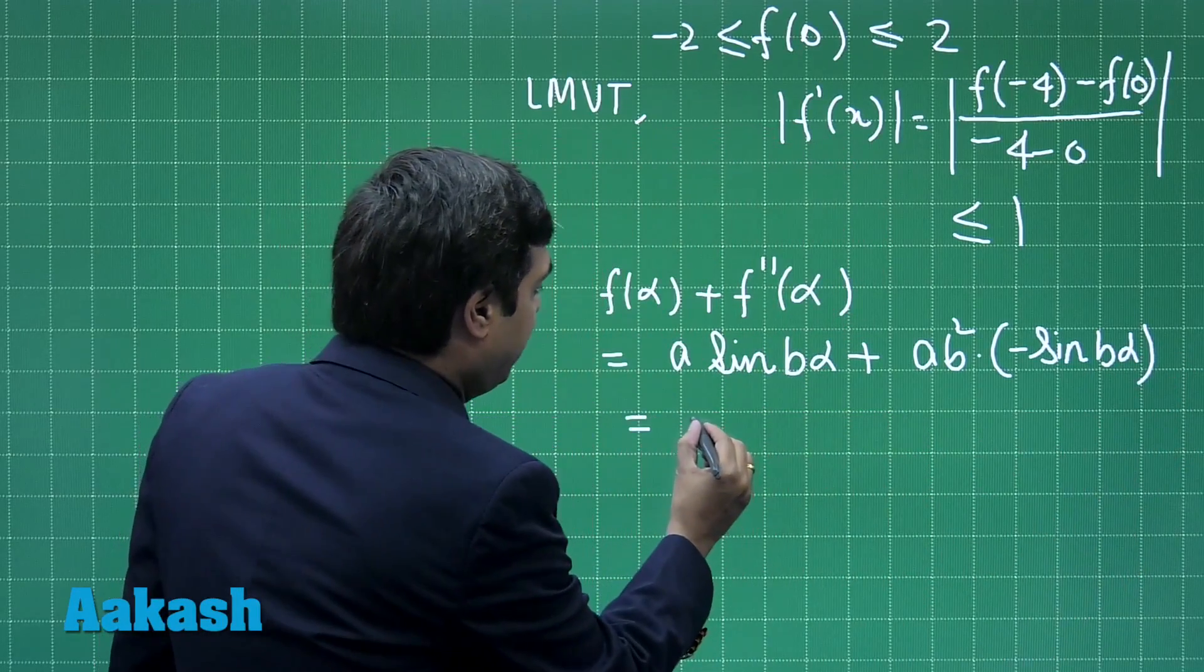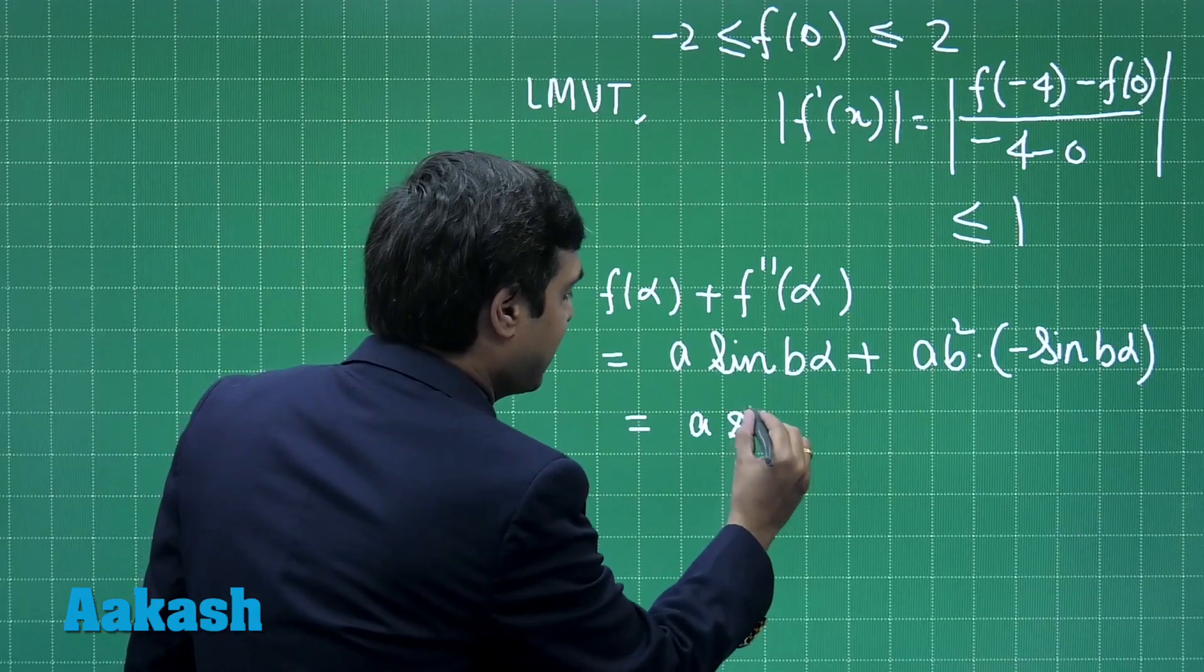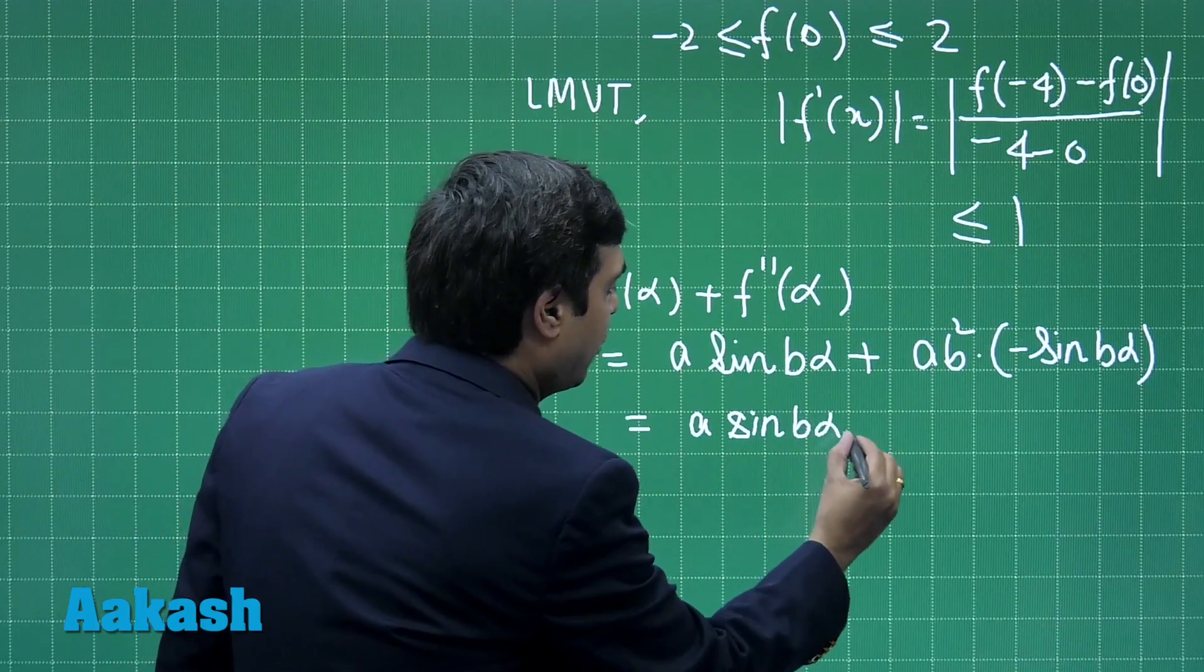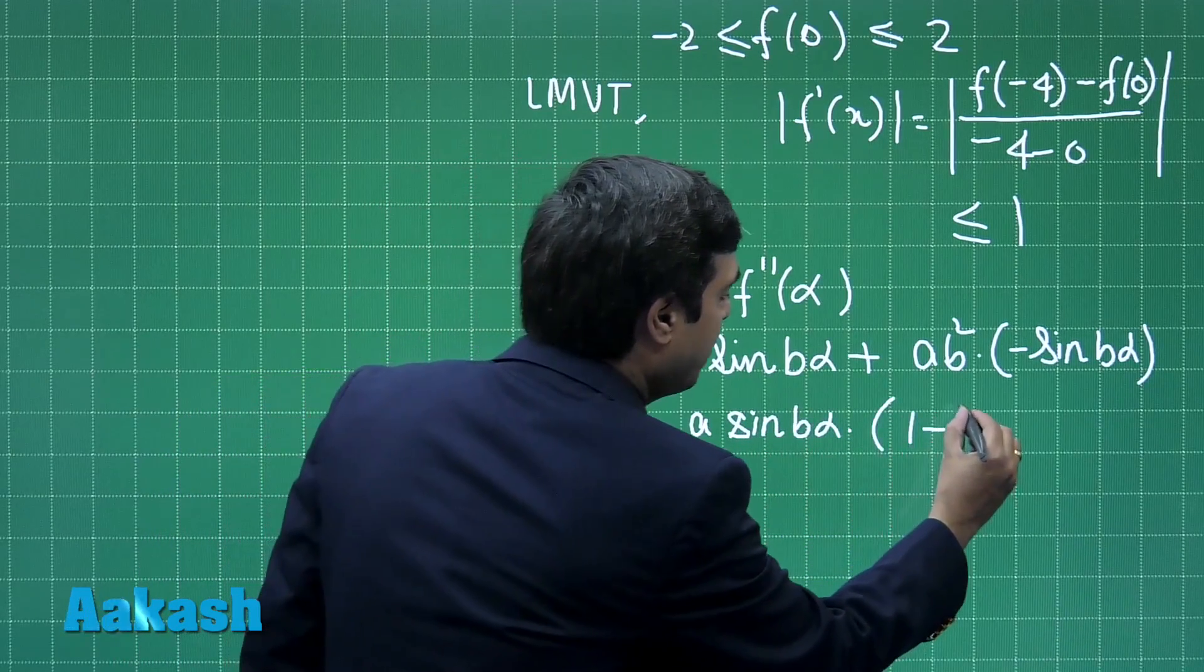We can see here that if we take a sin(bα) common we are left with 1 minus b square.